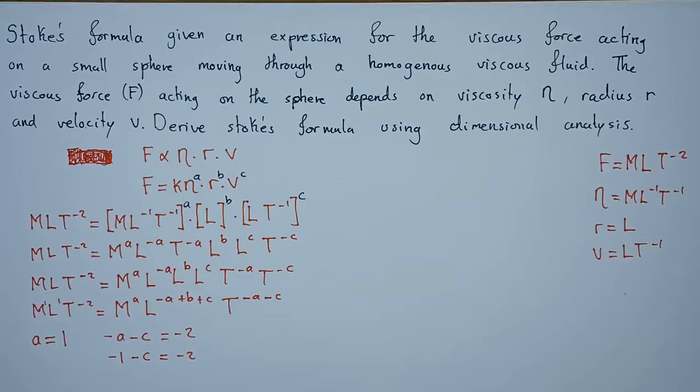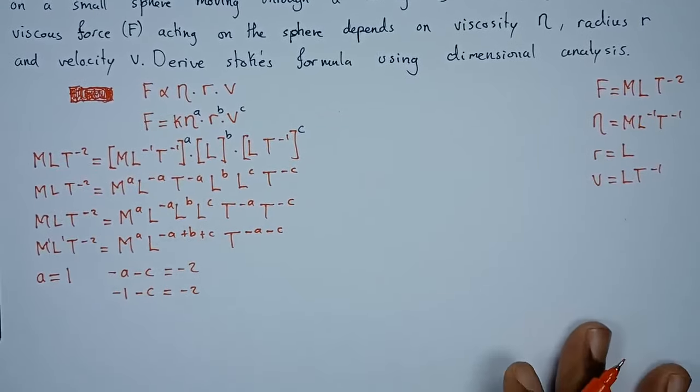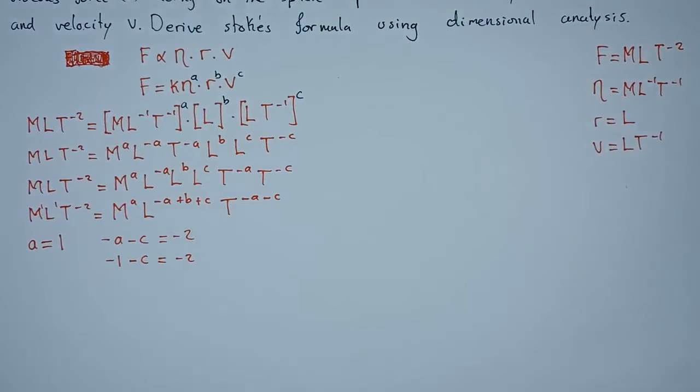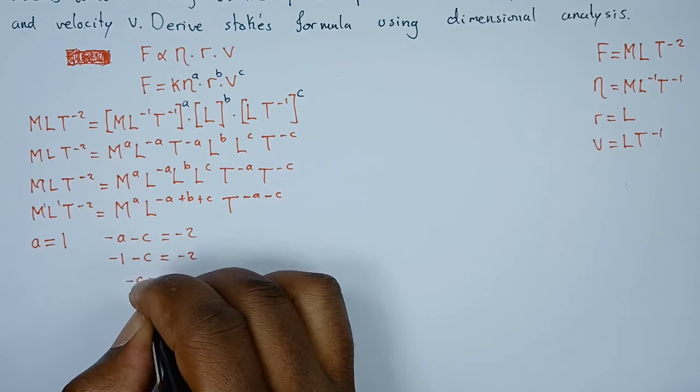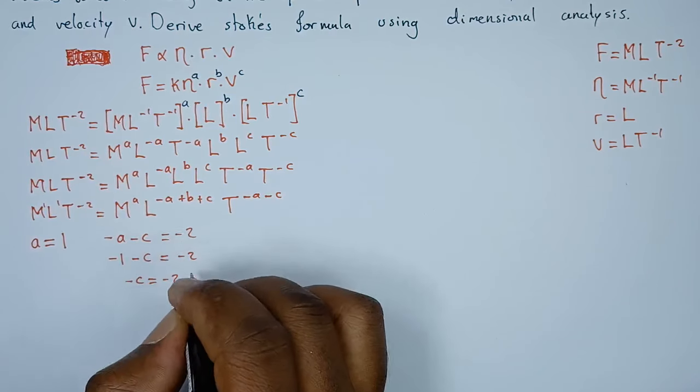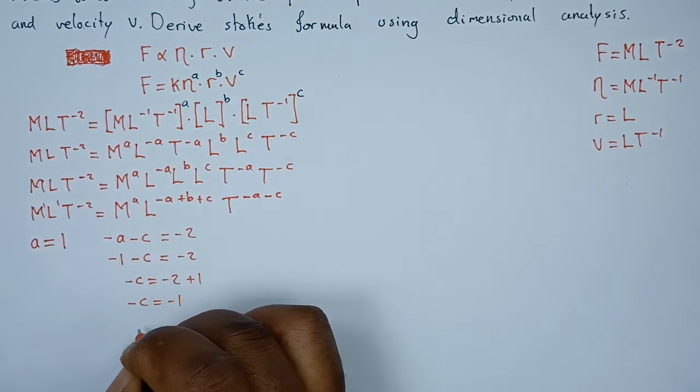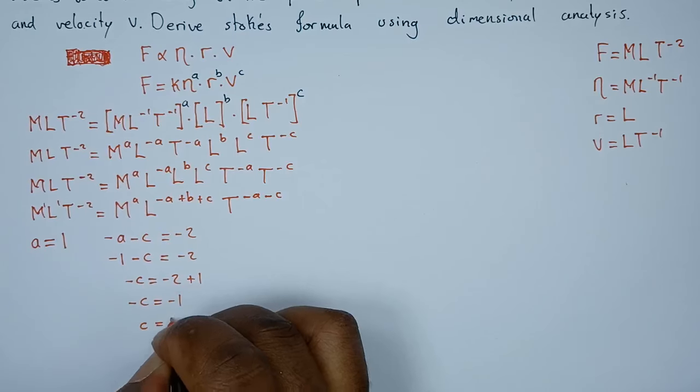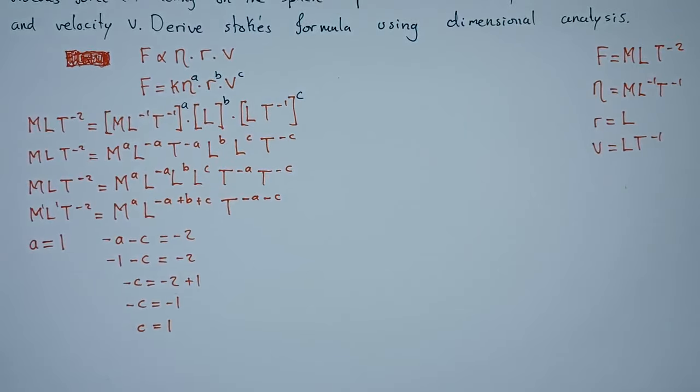How do we proceed to find the value of C? We can just push the one to the other side. We'll get negative C equals negative two, this one will become positive, so negative C equals negative one. Hence the value of C is one.